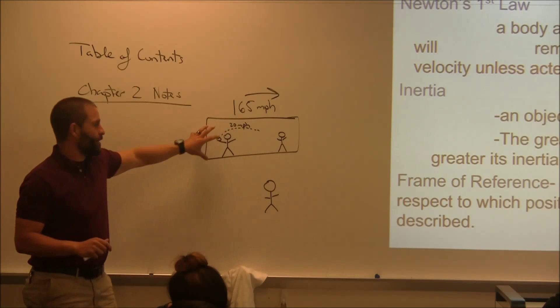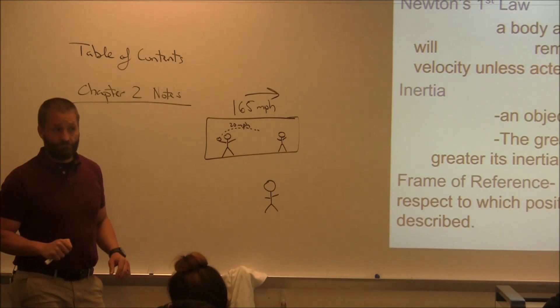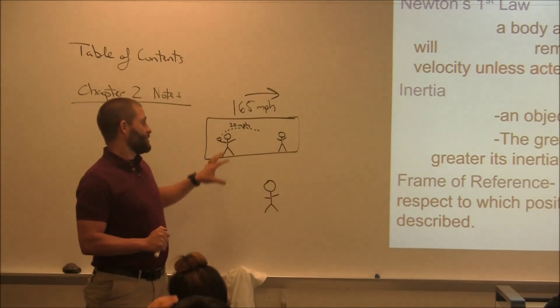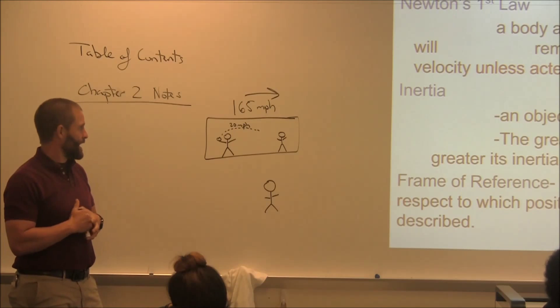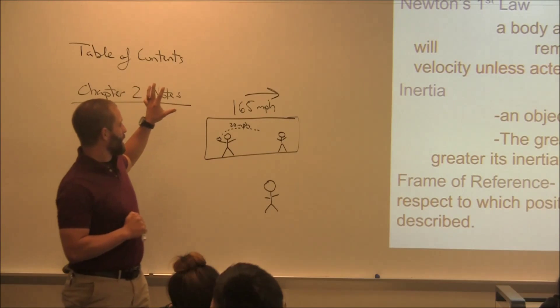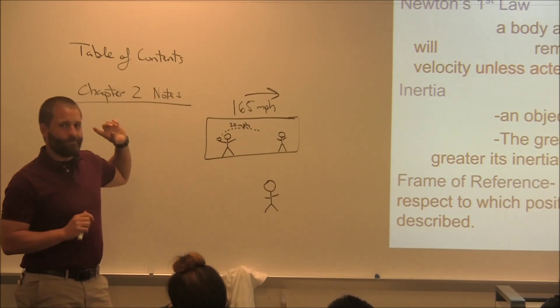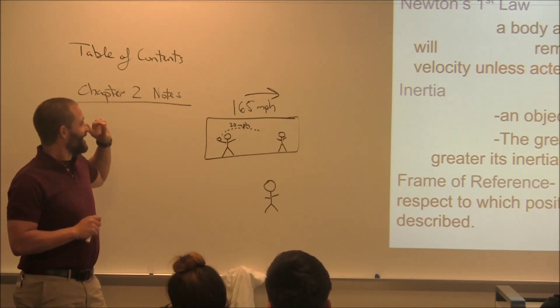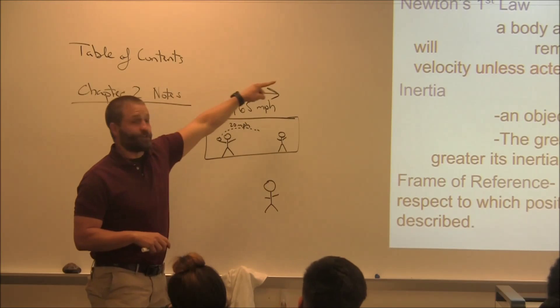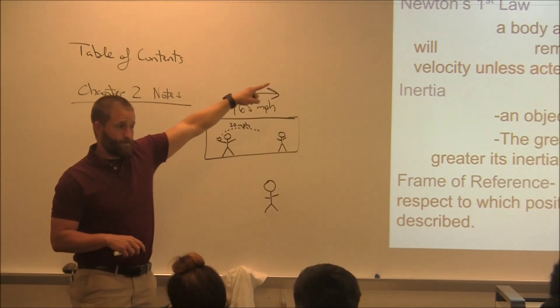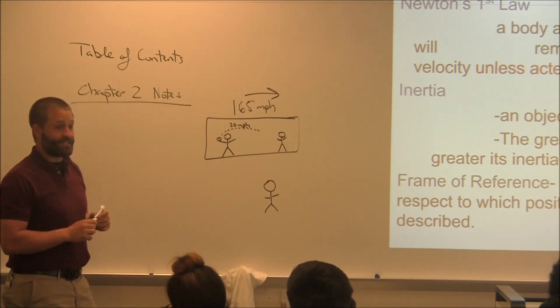Imagine these two people here are on a bullet train, a bullet train with plexiglass that everybody can see inside, right, no privacy. Don't worry about the bathrooms. So now, this is going 165 miles an hour in this direction. Why so fast? It's a bullet train, you know.